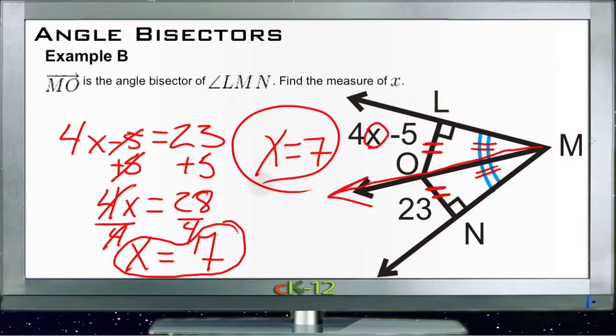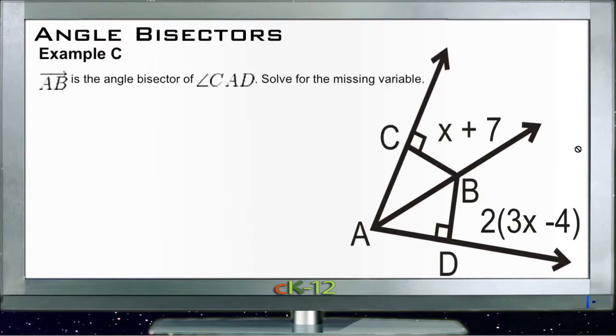Okay, Example C. Example C says ray AB is the angle bisector for angle CAD, and we need to solve for the missing variable. So in this case, solve for x.